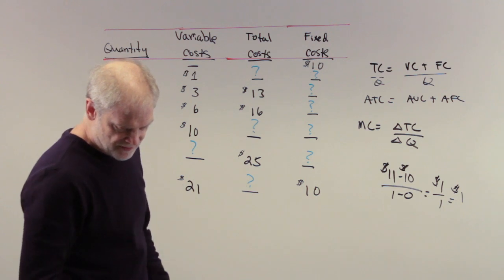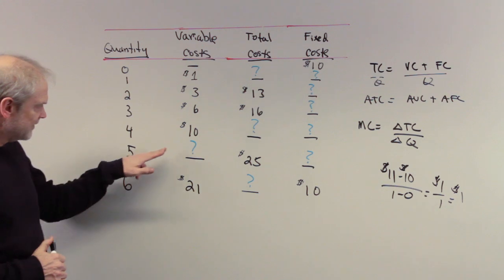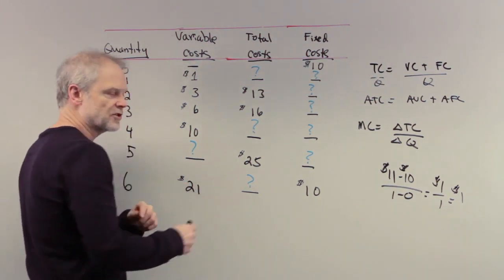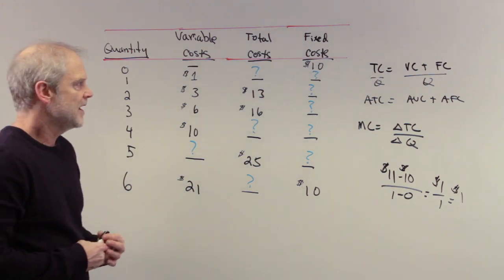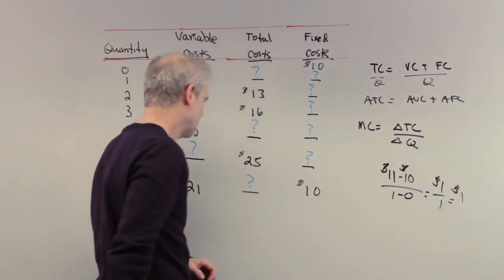Lastly, number seven, what is the variable cost of producing five posters? So we've got a five, question mark, how are we going to get this? Well, we know total costs are $25. And so we know total cost. And we know total cost is equal to the variable plus fixed.